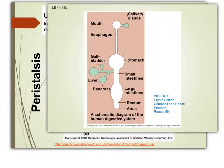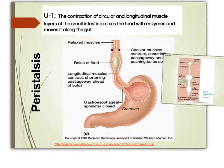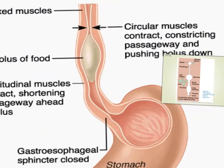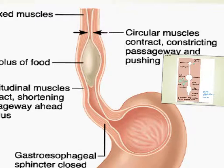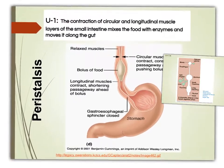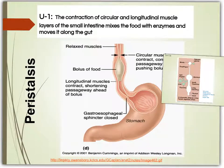Food moves along the gut by a process called peristalsis. During this process, circular muscles contract behind the bolus, creating a wave of contraction which mixes the food with enzymes and makes it move along the gut.